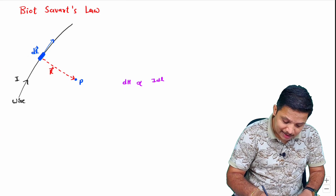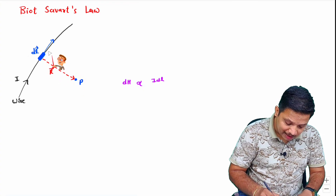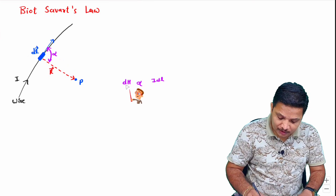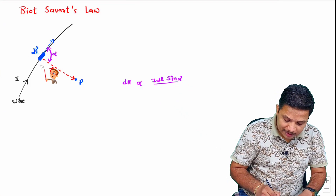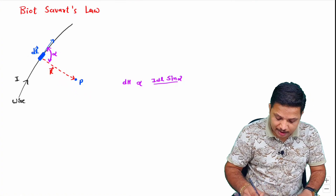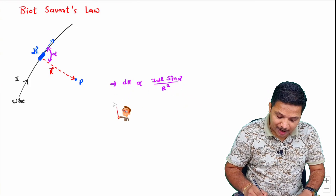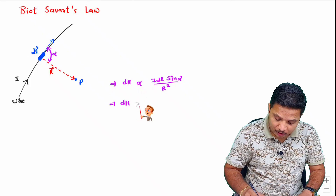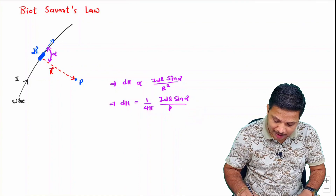DH is also directly proportional to the sine of the angle between DL and position vector R. If the angle between DL and position vector R is alpha, then DH is directly proportional to sine alpha, and inversely proportional to the square of distance R between DL and P. So DH equals (1/4π) × IDL × sinα / R².